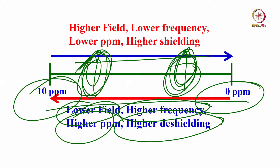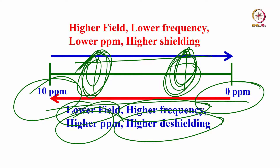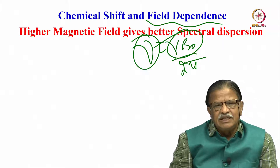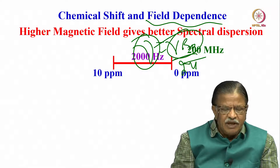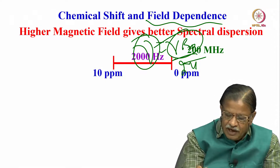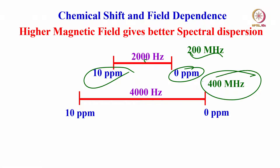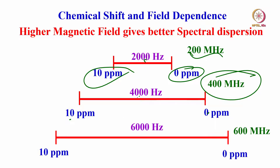Higher magnetic field gives better spectral dispersion — this is always true because ν = γB₀/2π. Resonant frequency varies linearly with magnetic field, so chemical shift also increases linearly. In a 200 MHz spectrometer, 0 to 10 ppm spans 2000 Hz for proton; in 400 MHz it spans 4000 Hz; in 600 MHz it spans 6000 Hz.